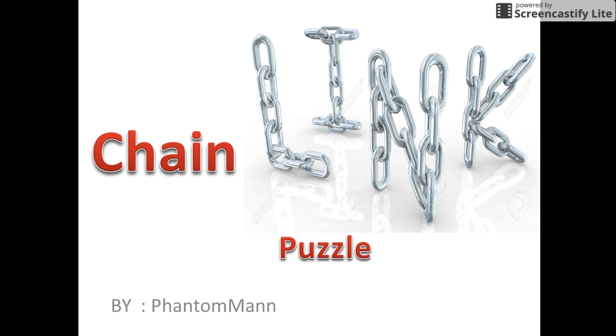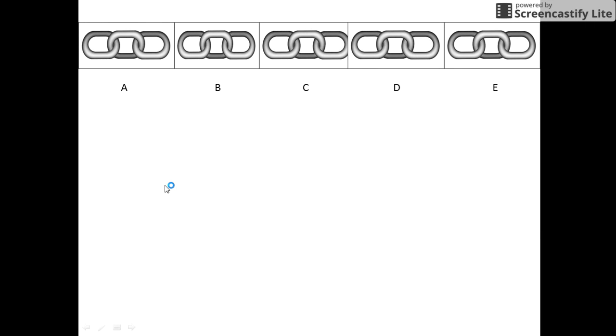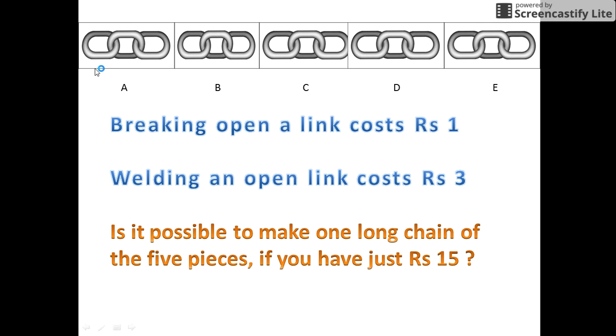Hello friends, let's see the chain link puzzle. In this puzzle, you are given five pieces of chain, each having three links. The five pieces are named A, B, C, D, and E respectively, with each chain having three links as shown in this figure.